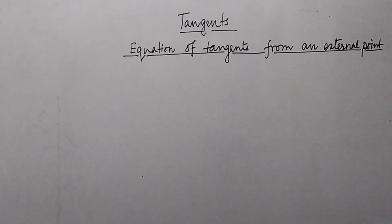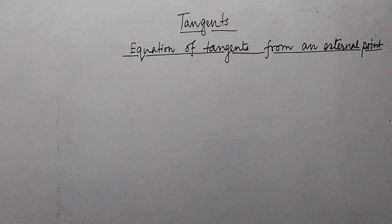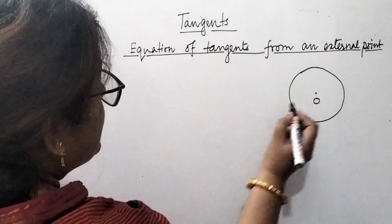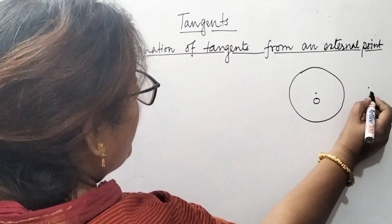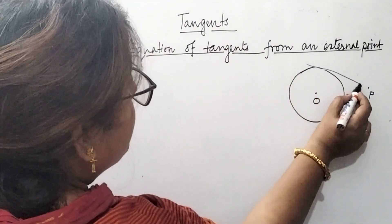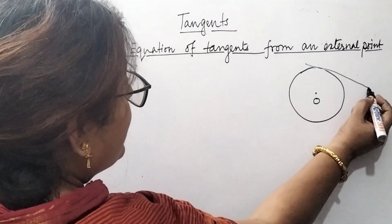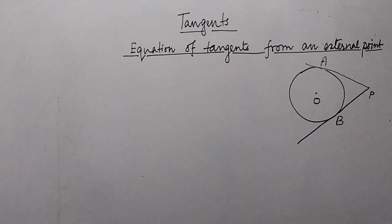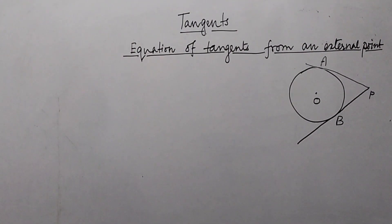Till now we have seen tangents drawn at a point on the curve. Now let's see what will happen if tangents are drawn from an external point to a curve. Suppose we consider the most well-known central curve, the circle, with center O. If we consider an external point P and draw tangents from P to the curve, we will get two tangents. The points of contact are A and B respectively.